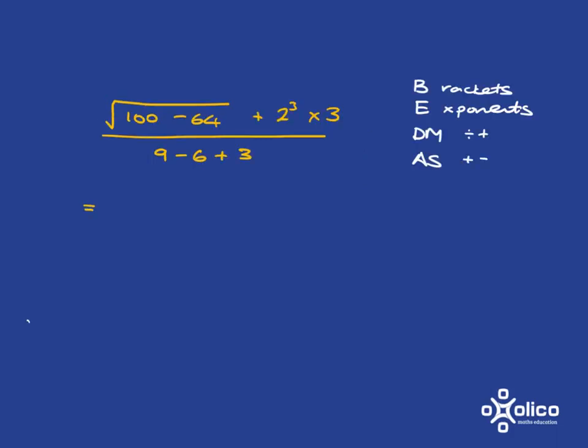Let's have a quick look at order of operations. We're going to use the acronym BEDMAS to help us remember the order in which to do things. We're going to deal with brackets first, then exponents, and after that, division and multiplication together, and after that, addition and subtraction together.